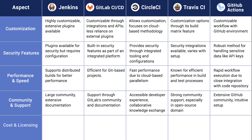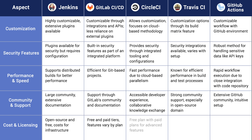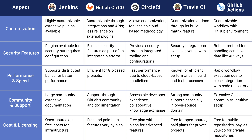And last but not least, let's look at cost and licensing. Jenkins is open source and free — the costs are for infrastructure. GitLab CI/CD has free and paid tiers, with features varying by plan. CircleCI has a free plan with paid plans for advanced features. Travis CI is free for open source and has paid plans for private projects. And GitHub Actions is free for public repositories and pay-as-you-go for private repositories.